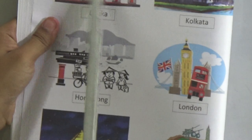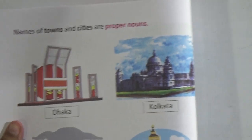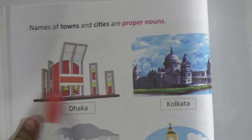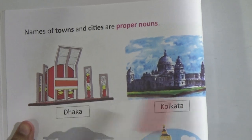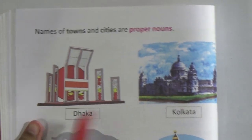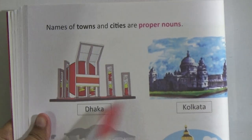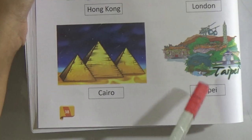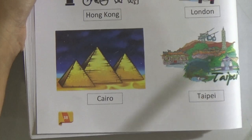Names of towns and cities are also pronounced as naming words. That means names of towns and cities — Dhaka, Kolkata, Hong Kong, London, Cairo, Taipei — these are actually the naming words.